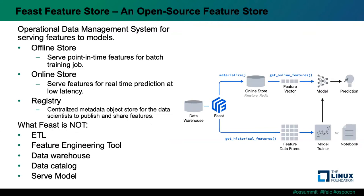Let's go over some basic terms of Feast Feature Store. Feast can be seen as a feature managing and serving layer for your model in production. The three main concepts are: the online store, which serves feature data to models from a low-latency store in production for real-time predictions; the offline store, used to serve features for batch training jobs; and the registry, used to store feature metadata.